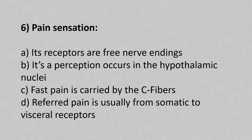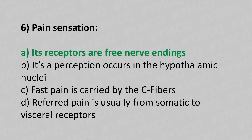Question 6: Pain sensation — Option A: its receptors are at the free nerve endings. Option B: its perception occurs in the hypothalamic nuclei. Option C: fast pain is carried by the C fibers. Option D: referred pain is usually from somatic to visceral receptors. The answer is Option A — its receptors are free nerve endings.